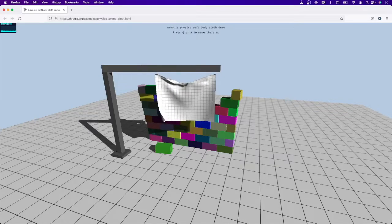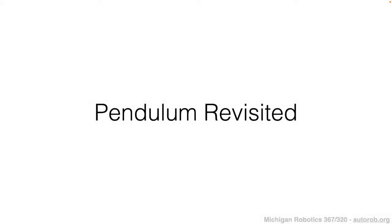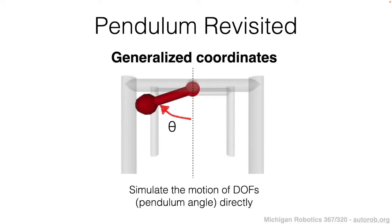Now let's revisit the pendulum and specifically how we're defining the pendulum's state as we move towards the control topic. From last lecture on physical simulation, a key topic was how we define the state space — or configuration space — of the pendulum. In this course, we use what's called generalized coordinates, where the motion simulated is with respect to the system's degrees of freedom. For the pendulum, there's one degree of freedom: the one revolute axis about which the pendulum can rotate.